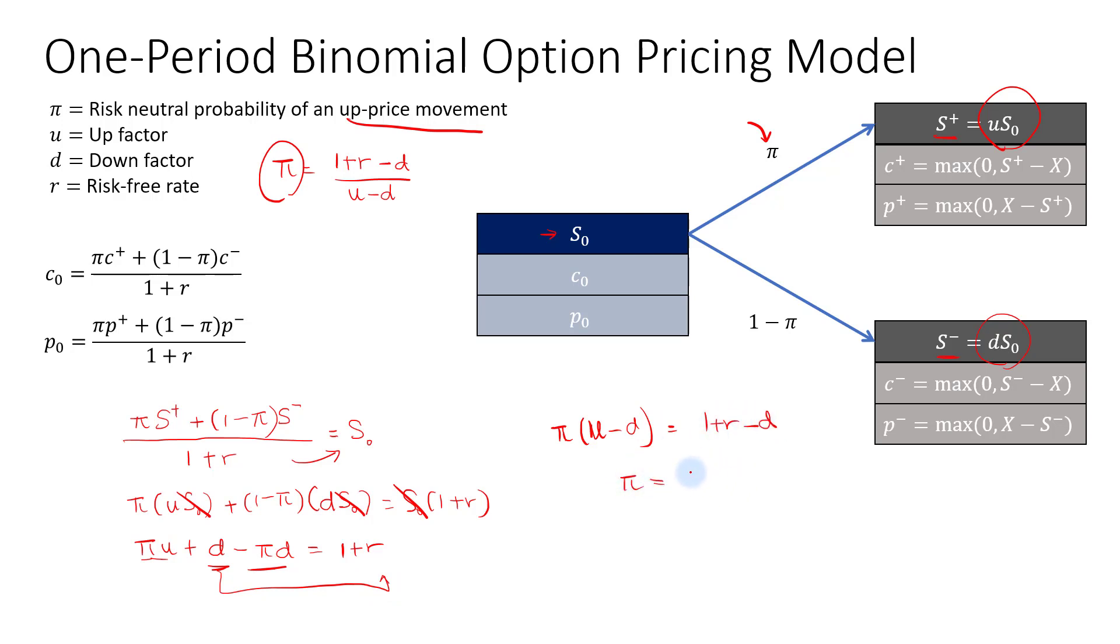And finally, for pi, that equals 1 plus R minus D over U minus D. So this is how we derive the risk-neutral probability for the one-period binomial option pricing model, where the price can either move upwards by a factor of U or it can move down by a factor of D.